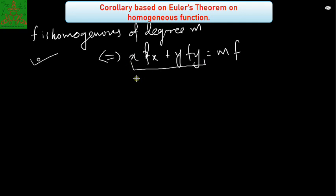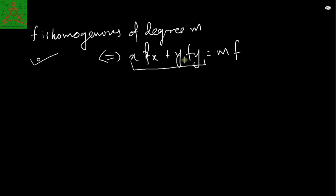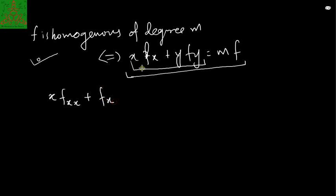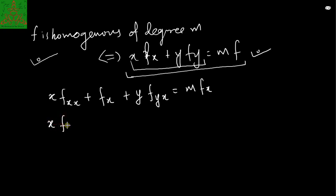Euler's theorem gives you the first order derivative expression. We can also obtain the second order derivative expression. If I differentiate the expression x·fx + y·fy = m·f with respect to x, we'll have x·fxx plus fx — since the derivative of x with respect to x is 1 — plus y·fyx, equal to m·fx.